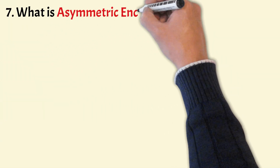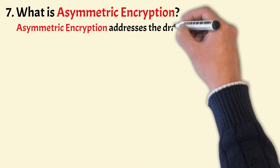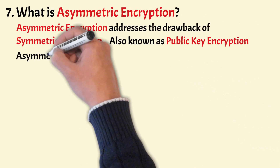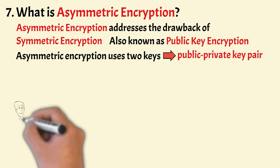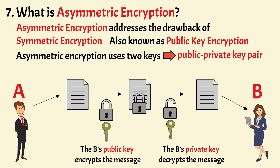What is asymmetric encryption? Asymmetric encryption addresses the drawback of symmetric encryption. It is also known as public key encryption. Asymmetric encryption uses two keys instead of one — we call it a public-private key pair. When a message is encrypted with the public key of the recipient, it can only be decrypted by the private key of the recipient. In this way, even if the message is intercepted by a third party, they wouldn't be able to view it because only the private key of the intended recipient can decrypt it.